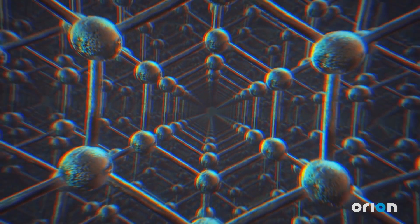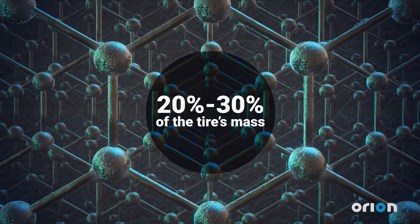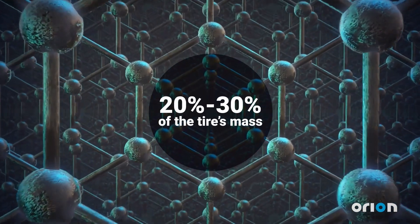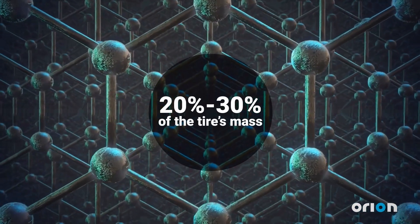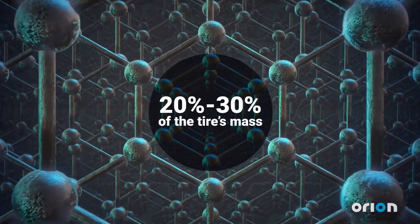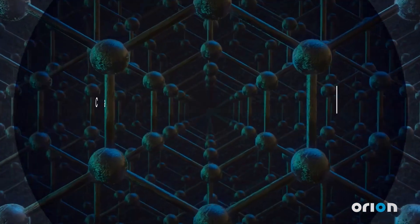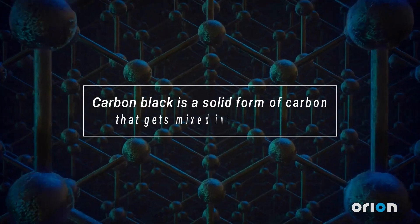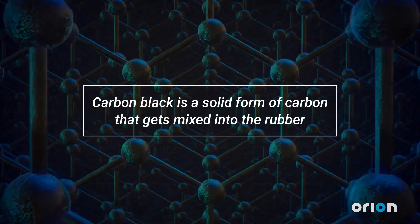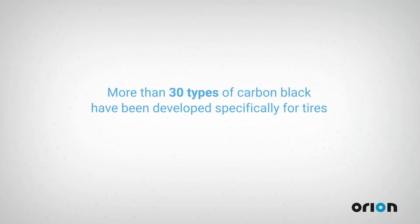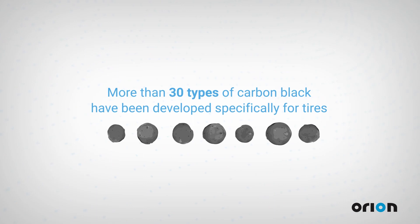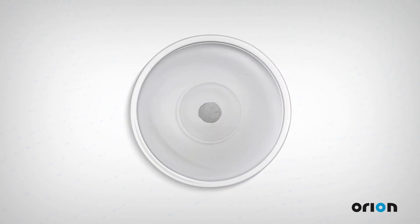Tires also contain carbon black, which makes up between 20% to 30% of the tire's mass. Carbon black is a solid form of carbon that gets mixed into the rubber. More than 30 types of carbon black have been developed specifically for tires, and each type has its own unique properties.